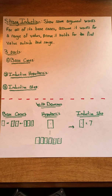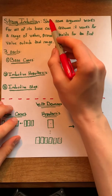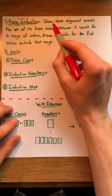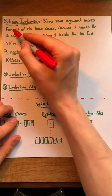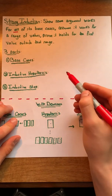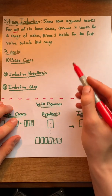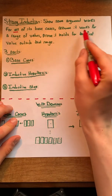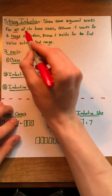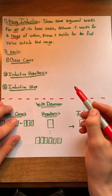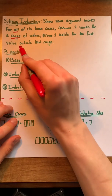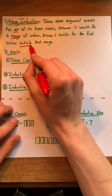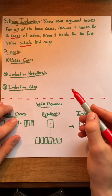Strong induction can be defined as follows. We want to show that some argument works for all of its base cases, assume it works for a range of values, and prove it holds for the first value outside of that range.